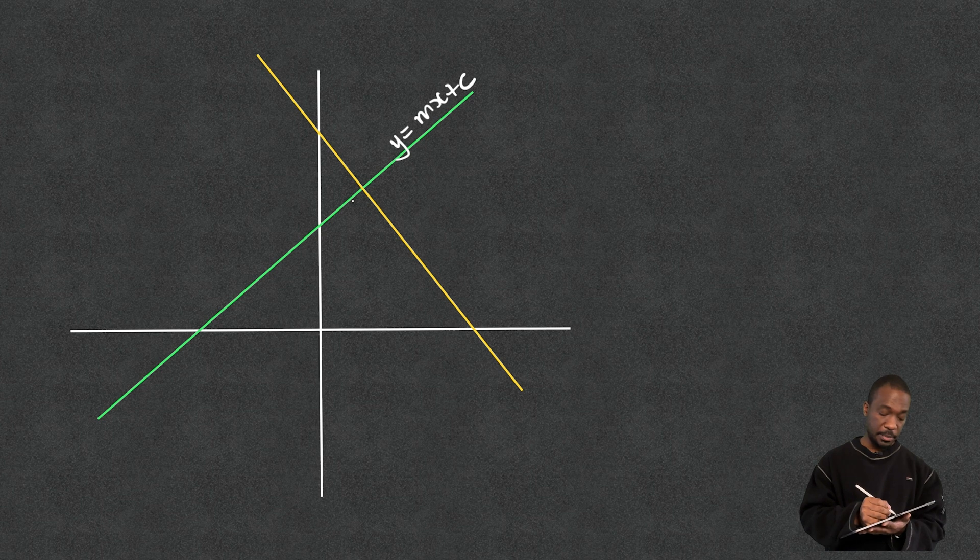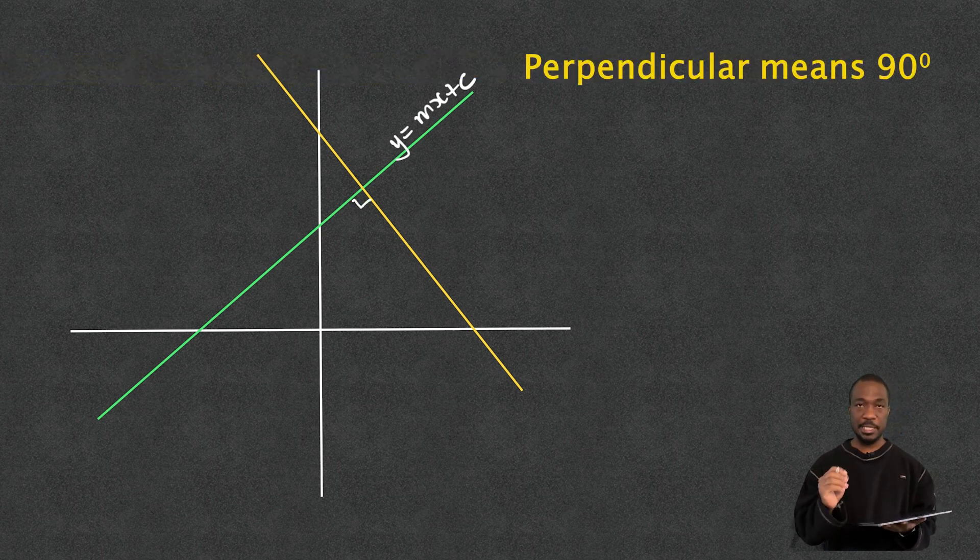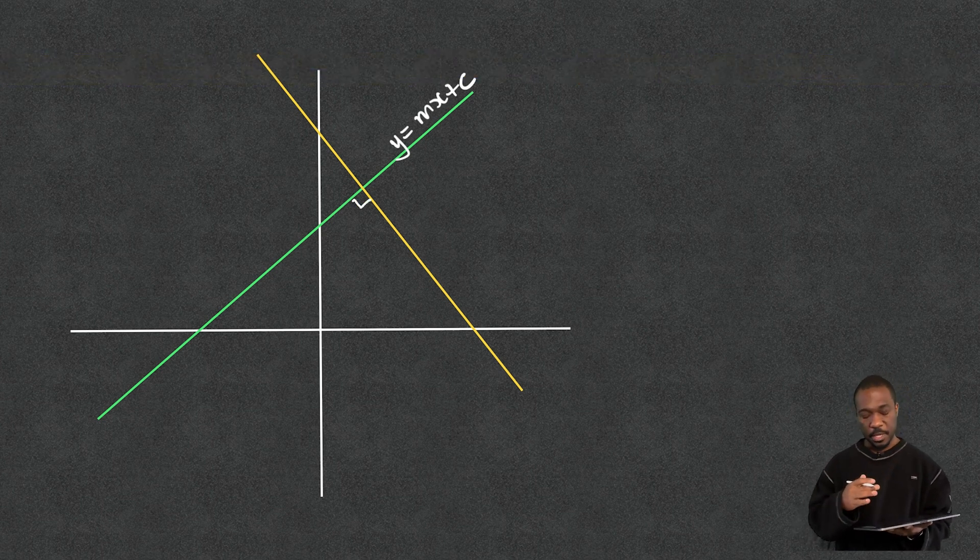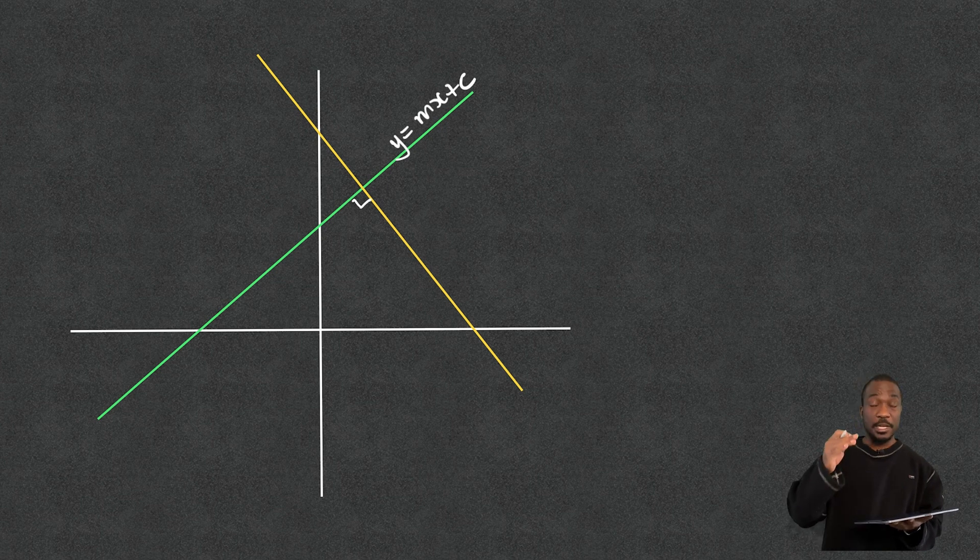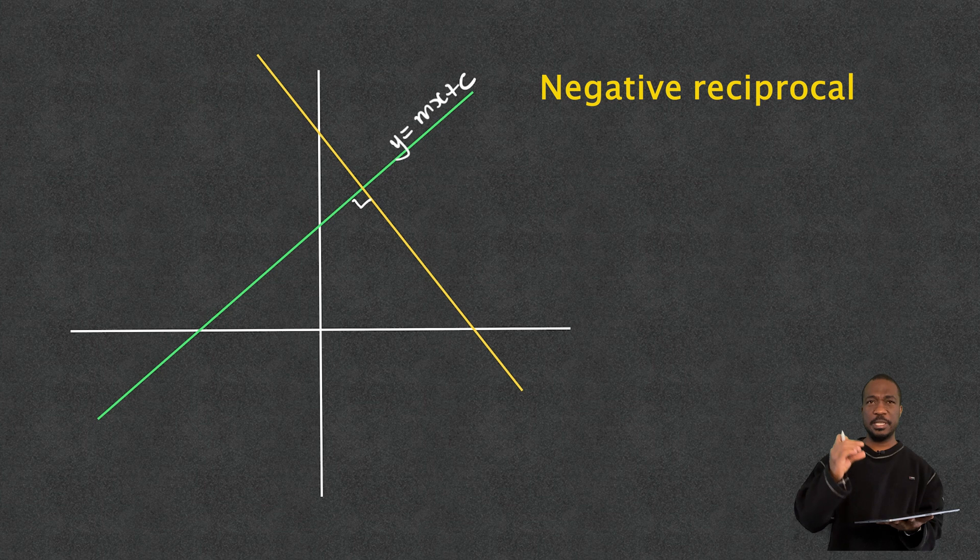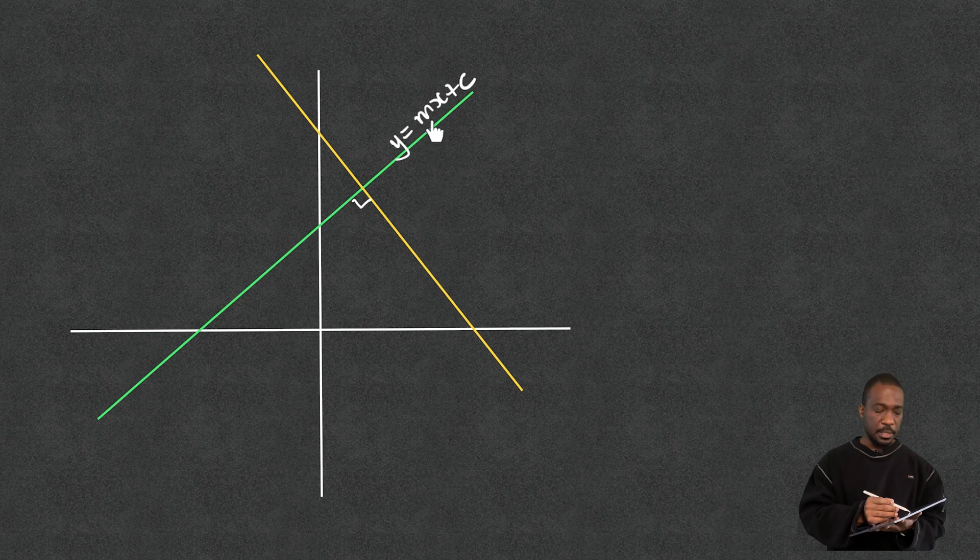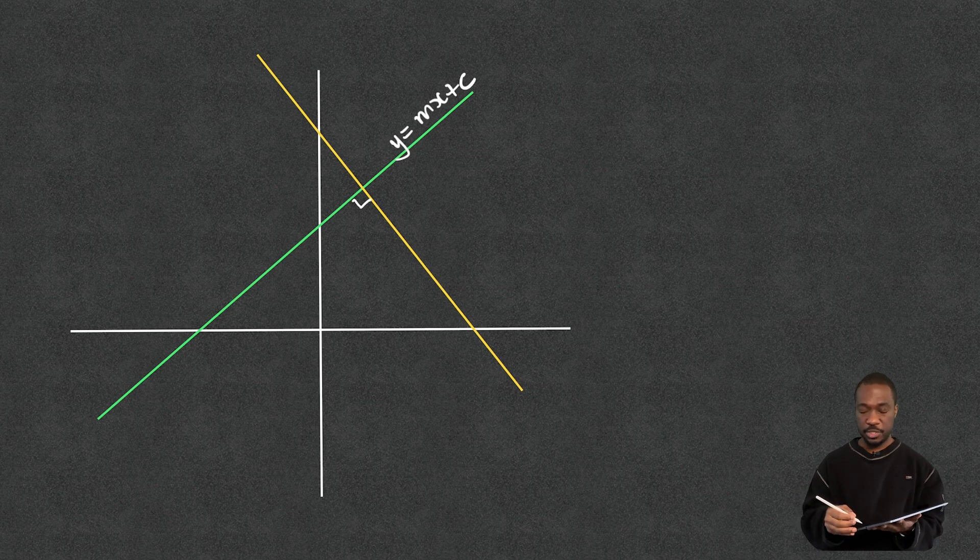So now I want to know what happens if I have a line that's perpendicular to this line. So perpendicular means that it's at 90 degrees to each other. Well what happens is the gradient of the perpendicular line is the negative reciprocal of the line that it's perpendicular to. What do I mean by that? Well, the gradient of this line is m. For the sake of argument, let's put it in an actual equation and see what happens.